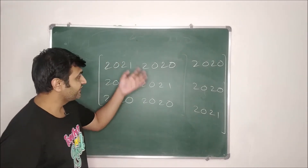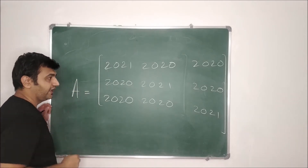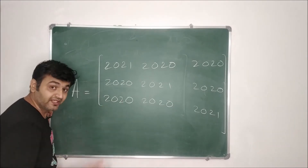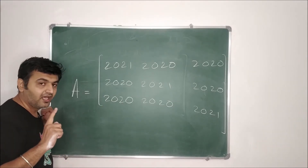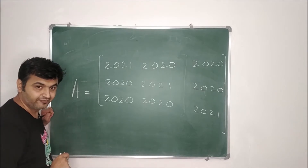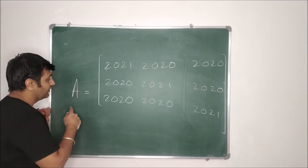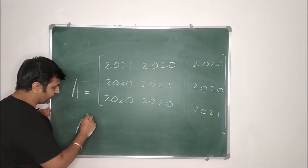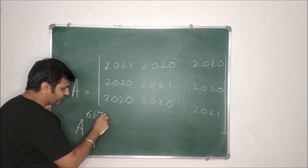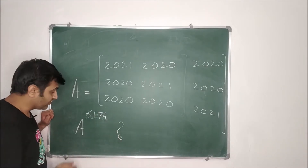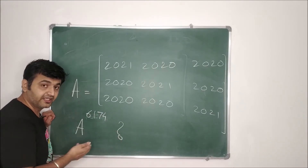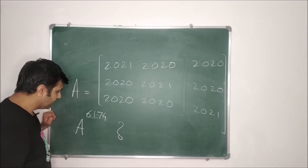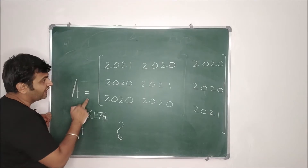Suppose this is my matrix A, it's a 3×3 matrix. If I ask you what are the eigenvalues and eigenvectors for this matrix, do you actually find them directly? The answer is no — we are going to use some nice properties. Even for something like A raised to the power 6174, I have already discussed the power-related result in my earlier lecture; the link is in the description.